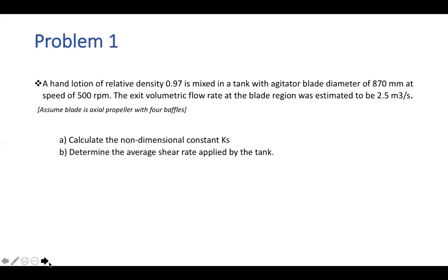So problem one states hand lotion of relative density 0.97 is mixed in a tank with agitator blade diameter of 870 millimeters at a speed of 500 RPM. The exit volumetric flow rate at the blade region was estimated to be 2.5 meters cubed per second. And we want you to assume that the blade is actual propeller with four baffles. So there's two parts of the problem. First, we want you to calculate the non-dimensional constant Ks. And then following this, we want you to calculate the average shear rate applied by the tank. So please take a second to use the equations provided and try the problem on your own.